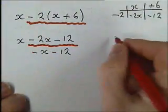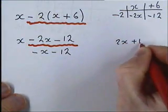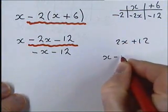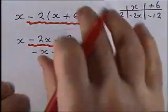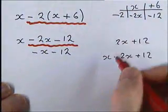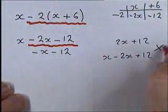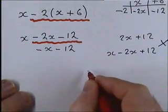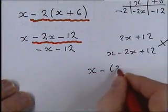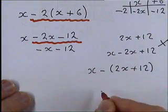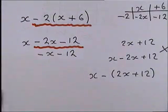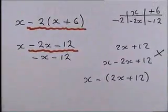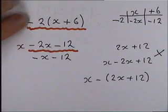If you get it wrong, it typically looks like this: students get 2x + 12 and write it as minus 2x + 12, but that is wrong. There is another way — writing x minus 2x plus 12 and going from there — but that's more complicated and more of an A-level approach. For now, think of it simply as negative two lots of the bracket.